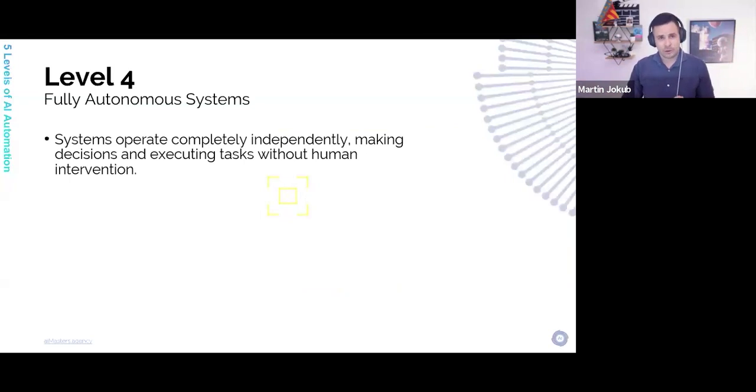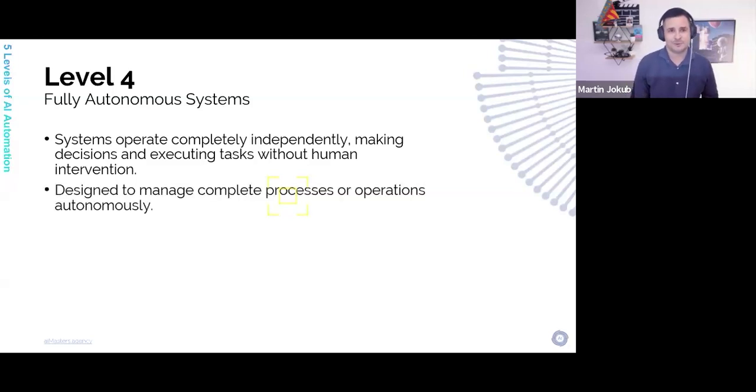When we go to level four, it's a full autonomous system, so it can operate completely independently, make decisions, and execute tasks without human intervention. And this is an amazing thing to think about. You just set the goal, and the machine just figures it out how to do that.